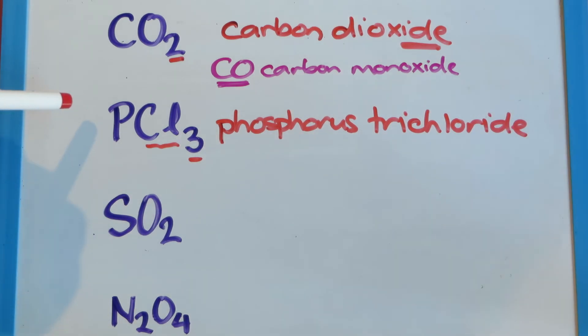There is another one that's like this, called PCl5. So five instead of a three, that would be phosphorus pentachloride. So we change that prefix in here to show the difference. And they are chemically a little different.